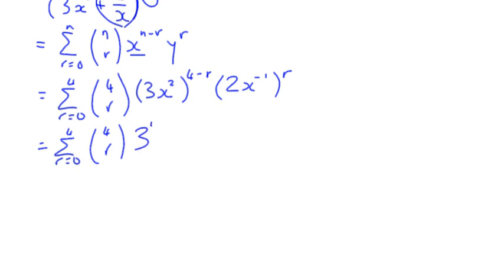I've got 3 to the power 4 minus R times X² to the power 4 minus R, and then the second term I can write as 2 to the power R and X to the power negative 1 to the power R. I'm separating the coefficient and the variable term in each of the brackets, keeping the correct powers with them.